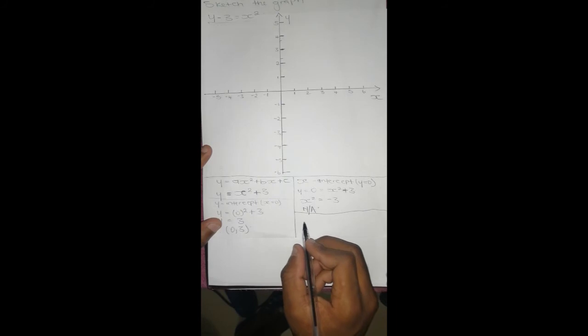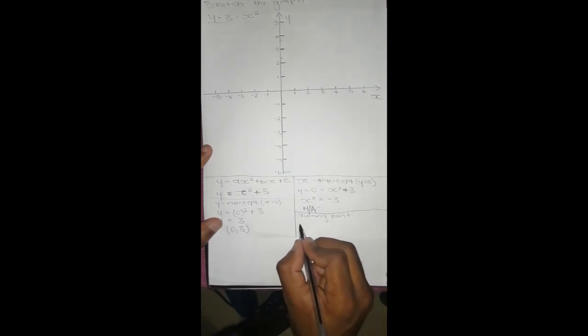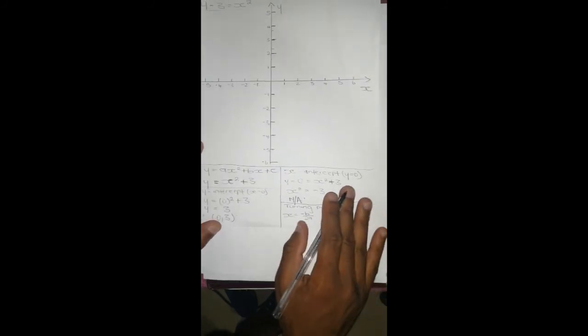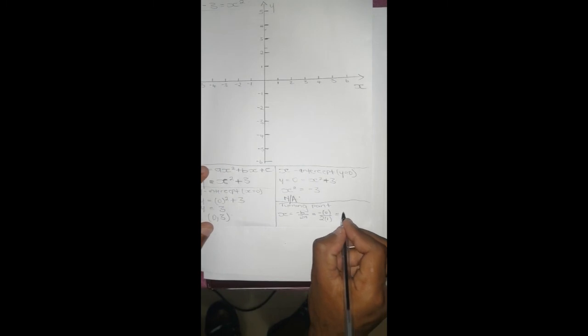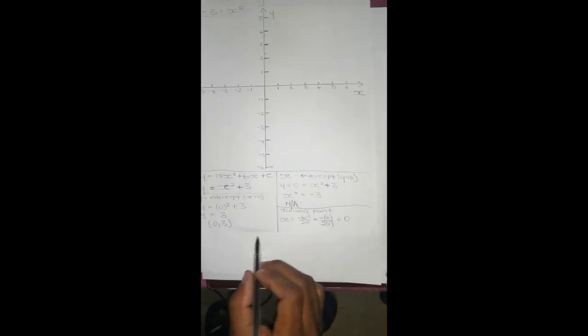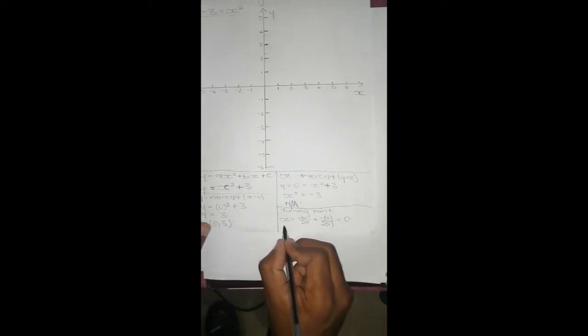Another thing to look at is the turning point. The x value of the turning point is given by the equation x equals negative b over 2a. In this case, our b is zero, so it's going to be negative zero over 2, and our a is 1, so it's going to be zero. If we check for an x value which is zero, we've got 3, so similarly here our turning point is going to be zero and 3.